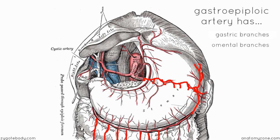If you remember from the peritoneal tutorial, the greater omentum hangs down in front of the small intestine. Something worth mentioning is that I've been referring to this artery as the gastroepiploic, but you might see it referred to as the gastro-omental artery — so worth bearing that in mind.